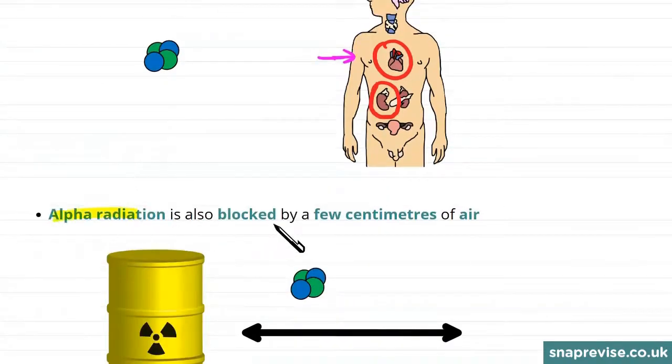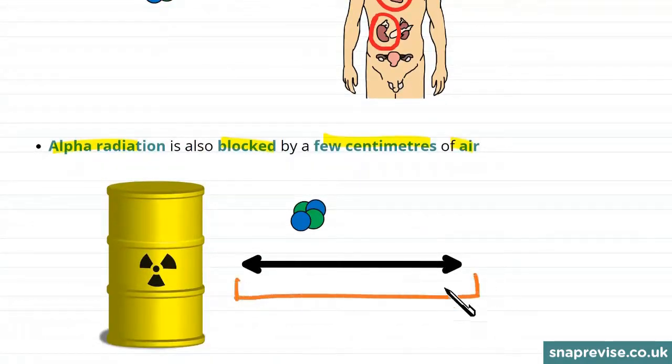Also, alpha radiation is blocked by a few centimeters of air. So if you are stood further away than a few centimeters from an alpha-emitting source, then not many of the alpha particles will actually reach you.